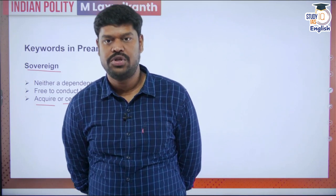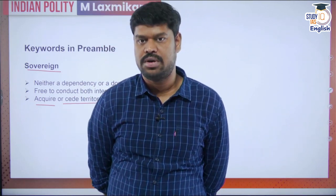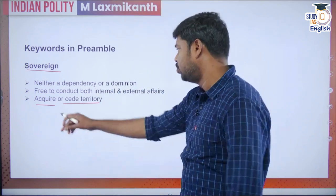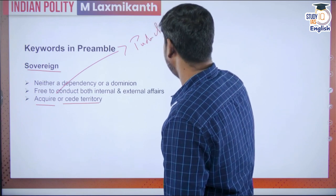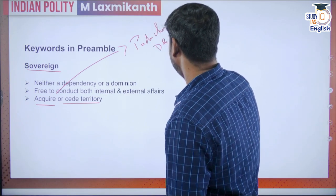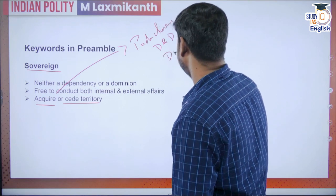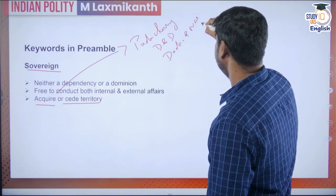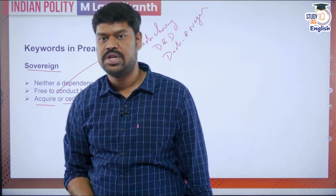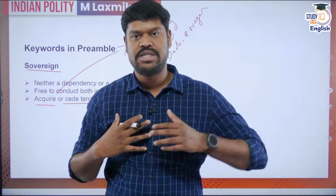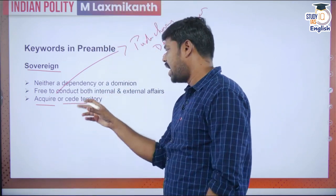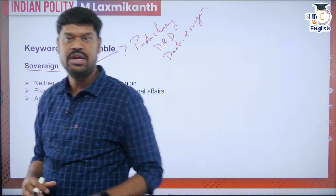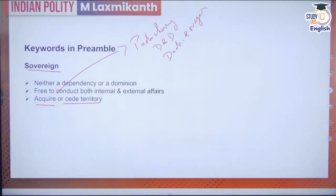After the commencement of the constitution, India has acquired a number of territories — Puducherry was not part of India at the commencement of the constitution; India also acquired Daman and Diu, Dadra and Nagar Haveli, and other territories. As a sovereign state, the state has the right to acquire territory, and it can also cede territory — it can give its territory to a foreign country.